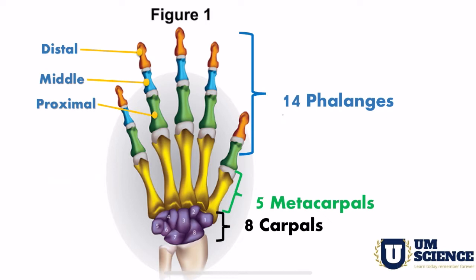Now for the middle area, that is the metacarpals: as we have one, two, three, four, and five fingers, a total of five metacarpal bones are connected with the fingers.